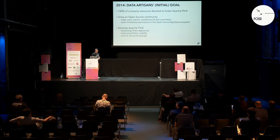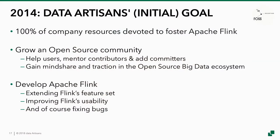The initial goal of the company was basically to devote 100% of resources towards fostering Apache Flink. Our goal was to make this a visible project in the big data landscape. Our main goal was to grow a community around that — helping users, mentoring contributors, helping them to become committers at some point, but also gaining mind share for this project. And of course, also developing Flink, adding new features, fixing bugs, and so on.